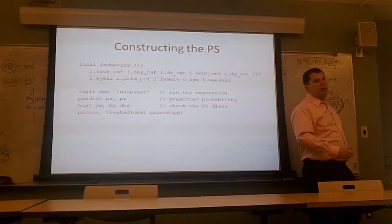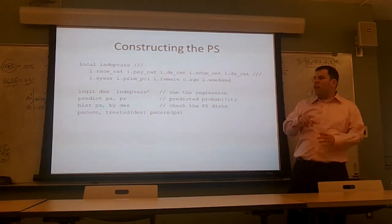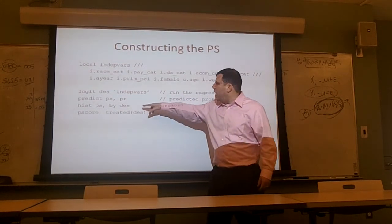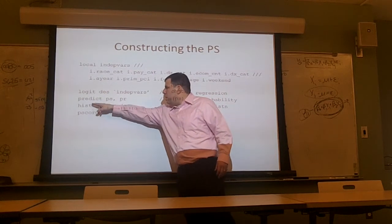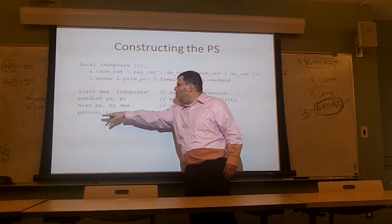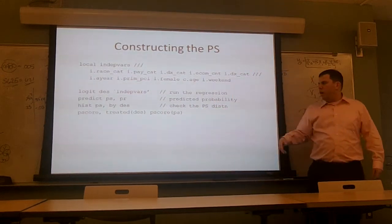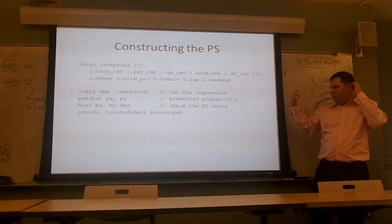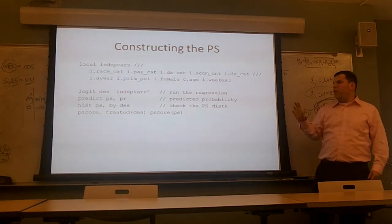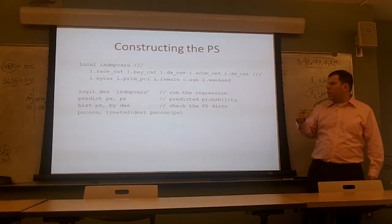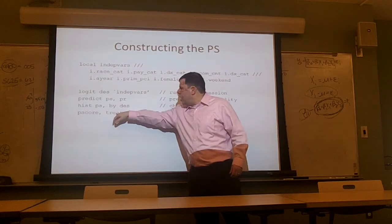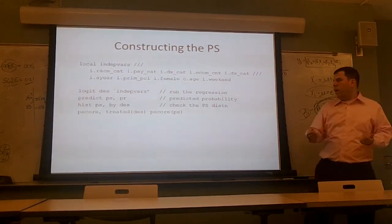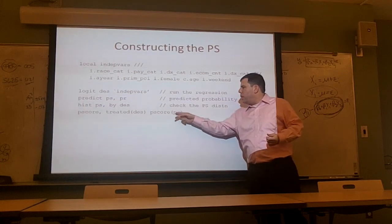There are two easy ways to look at the distribution of the predicted probability from this model. First, you can do a histogram by treatment group — a histogram of PS by whether you got treatment or not. There's also another command called 'pscore' which you need to download as extra user-written software. You say 'pscore' and pass the treated variable DES and the propensity score variable name PS.